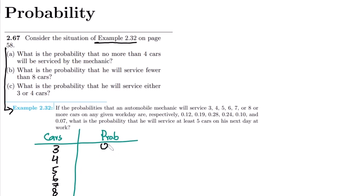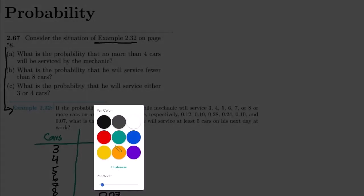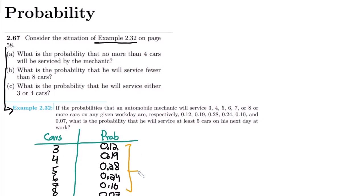For 3 cars I have 0.12, for 4 I have 0.19, for 5 I have 0.28, for 6 I have 0.24, for 7 I have 0.10, and for 8 or more I have 0.07. By adding them all you will see that they sum to 1, which is the essence of probability.